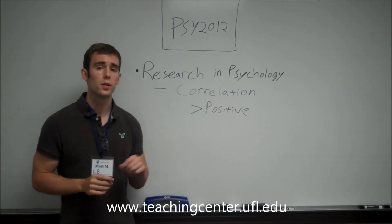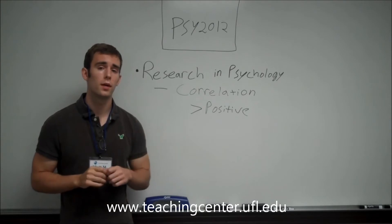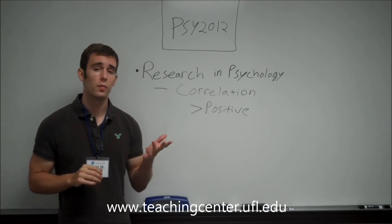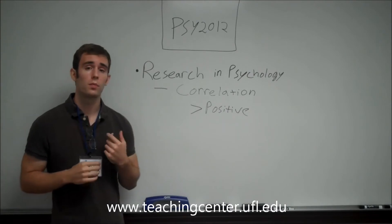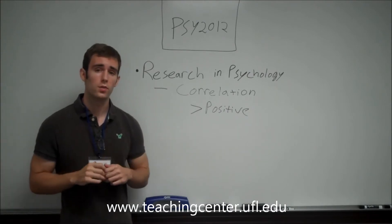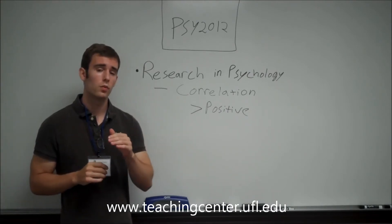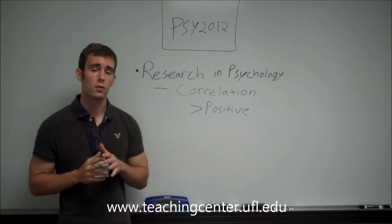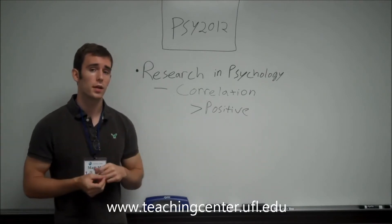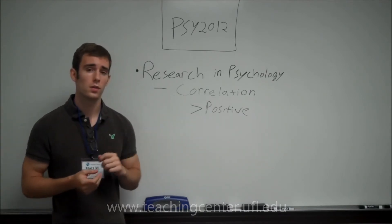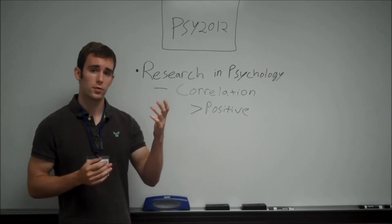A positive correlation is above zero and all the way up to one. Basically, as one variable goes up, the other one goes up as well. For example, amount of time studying and test scores — the more time you study, the higher your score.